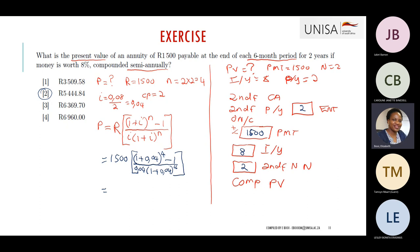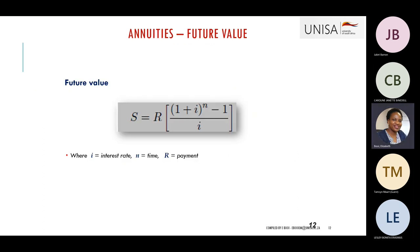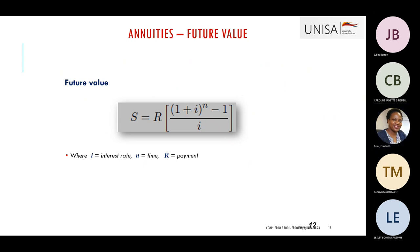Now let's move on to how we calculate the future value of an annuity. Remember: present value equals loans, future value equals savings. To calculate the future value of an annuity, we use: S equals R times (1 plus i) to the power n, minus 1, divided by i. Where R is your payment, S is your future value, I is your interest, and N is your time.